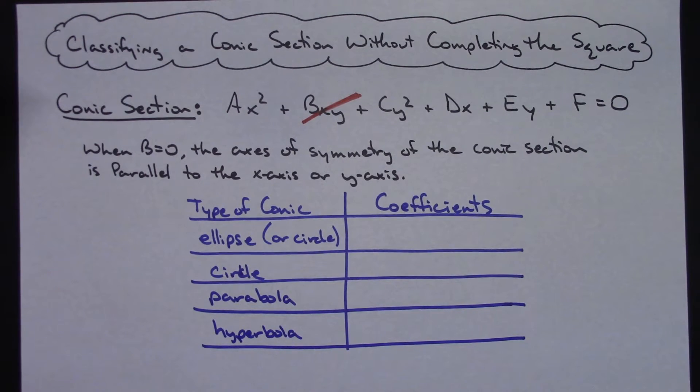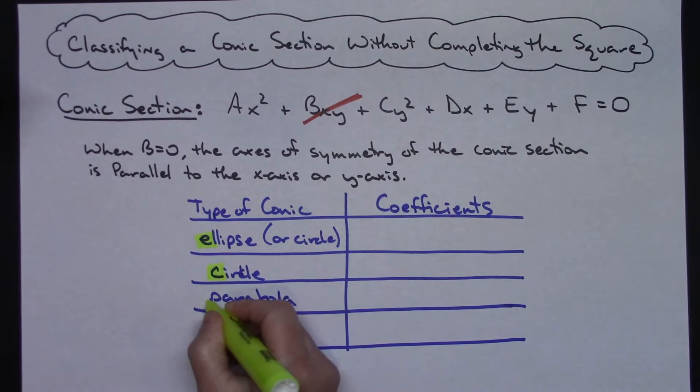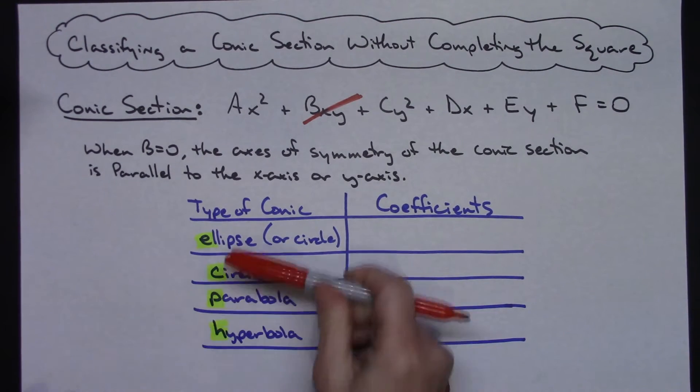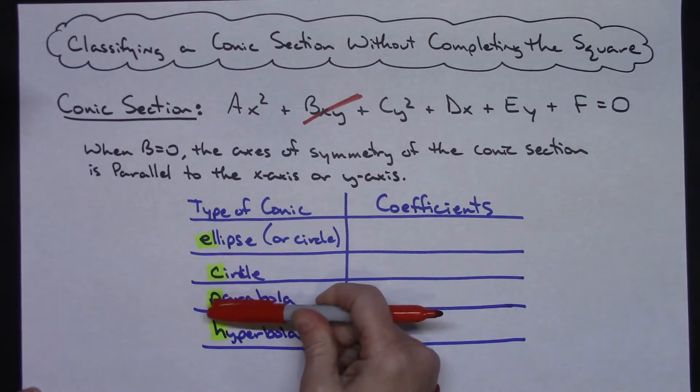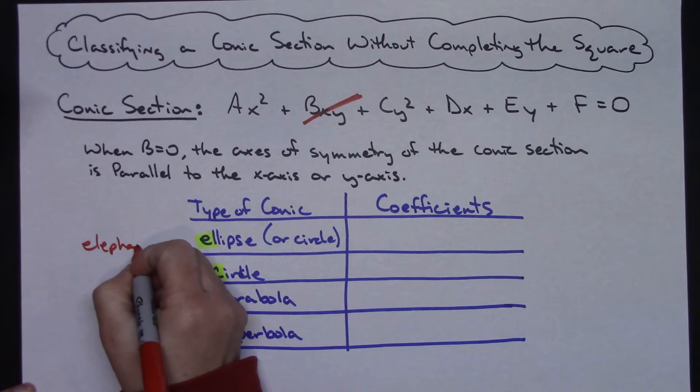Now an easy way to remember this is to take each one of these first letters, and then I usually try to come up with a stupid little mnemonic or something to help remember that. So for this one, I've got elephants can't party hard.